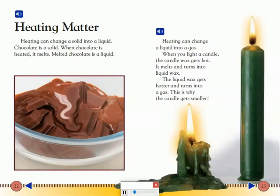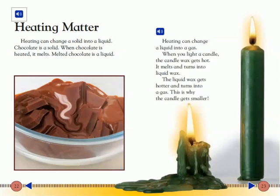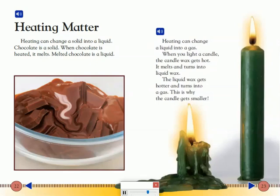Heating Matter: Heating can change a solid into a liquid. Chocolate is a solid, and when chocolate is heated, it melts. Melted chocolate is a liquid. Heating can also change a liquid into a gas. When you light a candle, the candle wax gets hot, melts, and turns into liquid wax. The liquid wax gets hotter and turns into a gas. This is why the candle gets smaller.